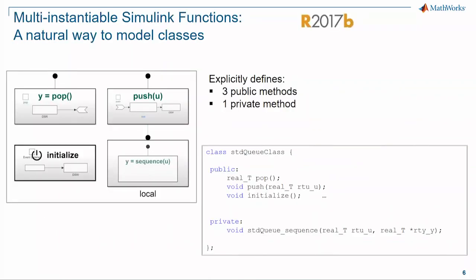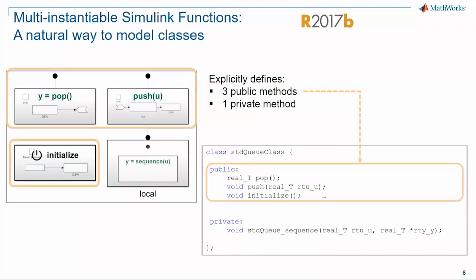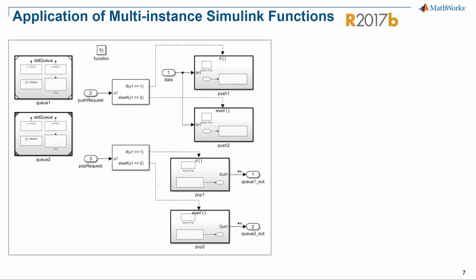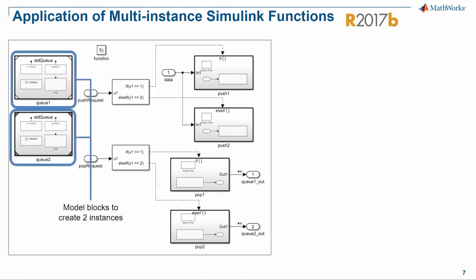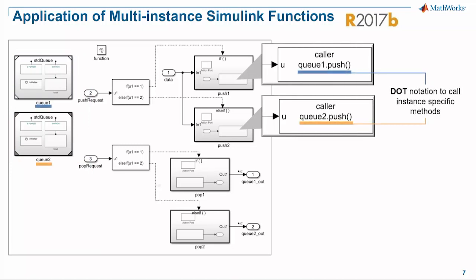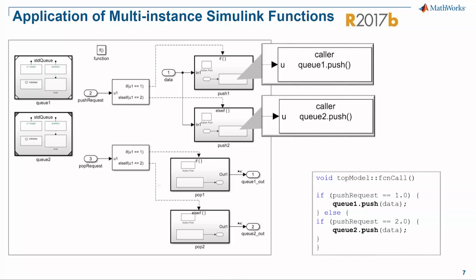If you want to model a class within Simulink, you can do that with Simulink functions. You can see two Simulink functions and an initialization system — these three functions become public methods of the class. A third Simulink function scoped with a subsystem becomes a private method. In a simple algorithm processing push and pull requests with a switch statement, you instantiate two separate queues with model reference blocks, and call into those separate instantiations using qualified dot notation with the function caller.